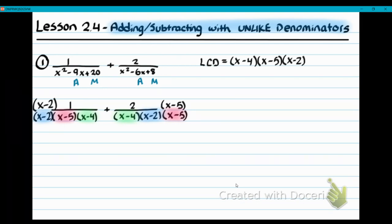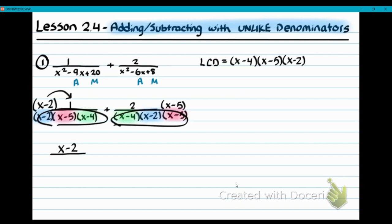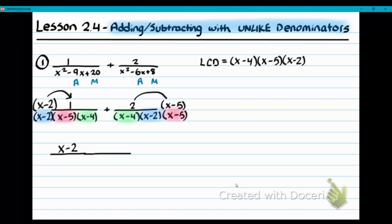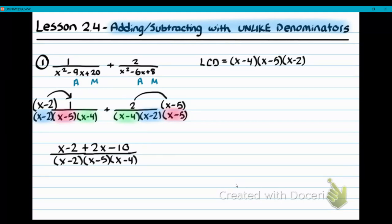Now you can add the two fractions because they have the same denominator. You have to work with the numerators — distribute them. X minus two distributed to one is just X minus two. In the same step, we combine into one fraction: plus two times X minus five, which gives us plus 2X minus 10, over the common denominator X minus two, X minus five, and X minus four. Remember, the order of the factors doesn't matter because of the commutative property of multiplication — they would equal the same number regardless of order.